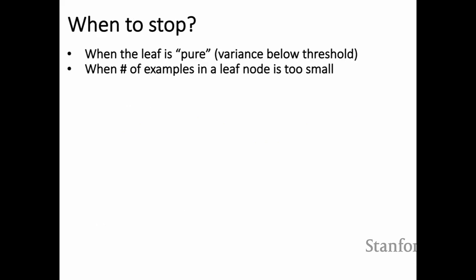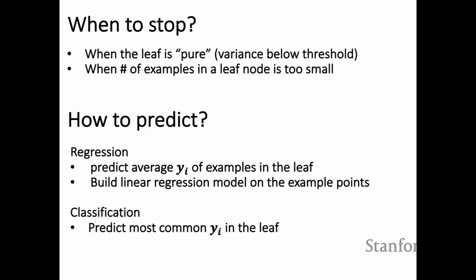For stopping criteria: one heuristic is when the leaf is pure enough — the data in that node has low variance. Another criterion is the number of examples in the leaf: when too few samples reach a node, you probably don't want to split further to avoid overfitting. For predictions at a leaf: in regression, you can take an average of the samples or build a linear regression model on the data in that leaf. In classification, you take the mode — the most common label value in the leaf node.